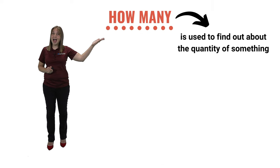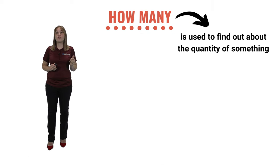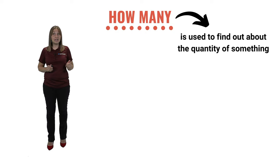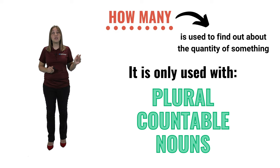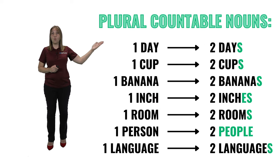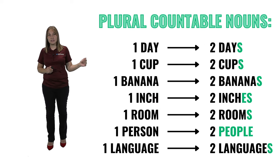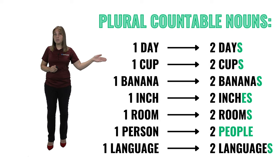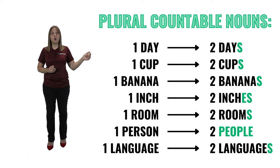The form 'how many' is used to find out about the quantity of something, and it is very important to remember that it is only used with plural countable nouns. These are the nouns that we can count. For example: one day, two days; one cup, two cups; one banana, two bananas.